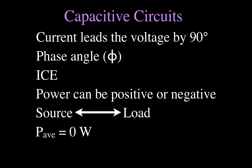To summarize: in a capacitive circuit, the current leads the voltage by 90 degrees — that's the phase angle. The current and voltage are out of phase. In a resistive circuit they're in phase, but in capacitive and inductive circuits they're out of phase. For capacitive circuits, the current leads the voltage. We use the handy mnemonic 'ELI the ICE man' — the ICE part tells us that for capacitive circuits the current comes before the voltage. The power in a capacitive circuit can be positive or negative: positive means power is flowing from the source to the load, and negative means power is flowing from the load back towards the source. When we add all those up, the average power is zero.